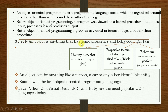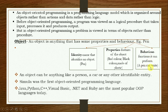An object is anything that has some properties and behavior. For example, there is an object pen — it has three components: identity, properties, and behavior. Identity refers to the name that identifies an object; here its identity is pen. Properties refers to the features of the object; the pen can be red or black color and is made of plastic. Its behavior is the functions it can perform — a pen can write. An object can be anything like a person, a car, or any other identifiable entity.